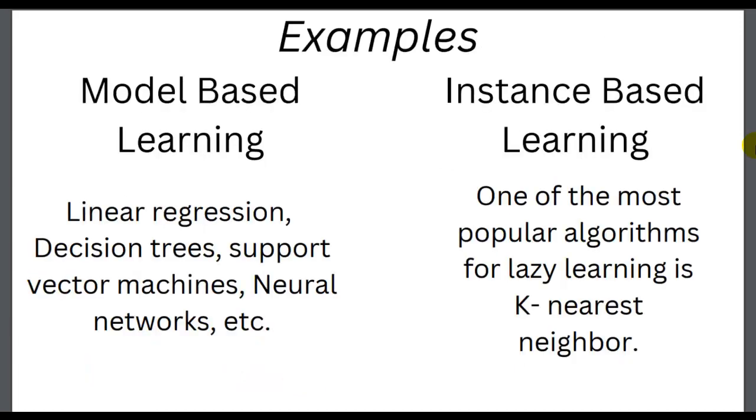One of the most popular algorithms for lazy learning is k-nearest neighbor. The k-nearest neighbors algorithm stores all the data points in memory. When a new data point is presented, it looks for the k closest neighbors to that data point and uses their outcomes to make a prediction.